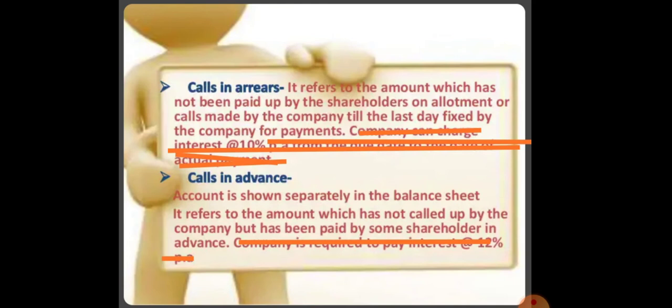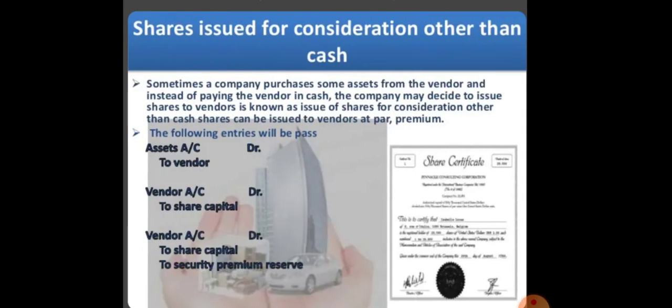Next, calls in arrears and calls in advance. When shareholders don't pay the called amount, it is called calls in arrears. When shareholders pay money in advance before it is called, it is called calls in advance. Calls in arrears refers to the amount not paid by shareholders on allotment or calls made by the company till the last day fixed for payment. Calls in advance refers to the amount which has not been called up by the company but has been paid by some shareholders in advance.